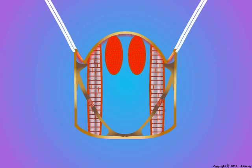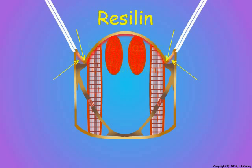80% of that stored energy is recovered during the counterstroke. The energy is stored in a unique rubber-like protein called Resilin. Resilin stores and releases energy with 97% efficiency and is found in the membranous regions of the wings and legs where it is stretched during movements.